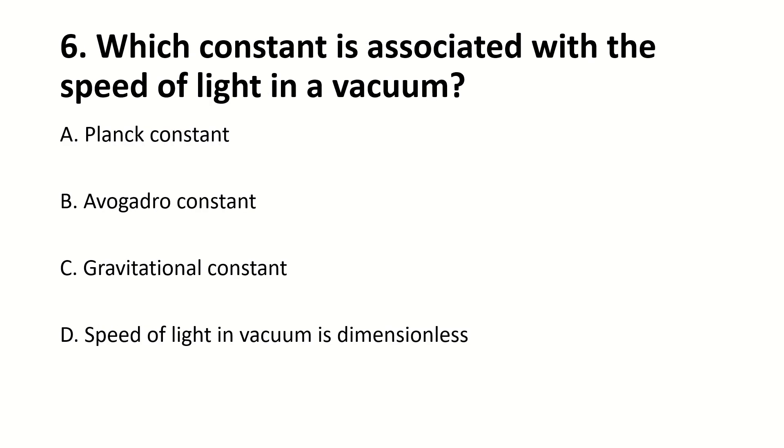Which constant is associated with the speed of light in vacuum? Answer is D, speed of light in vacuum is dimensionless.